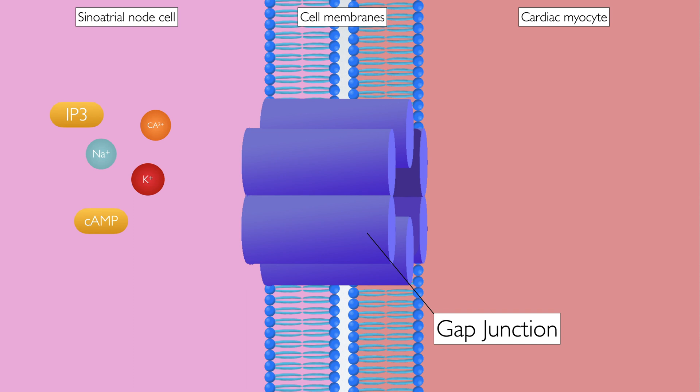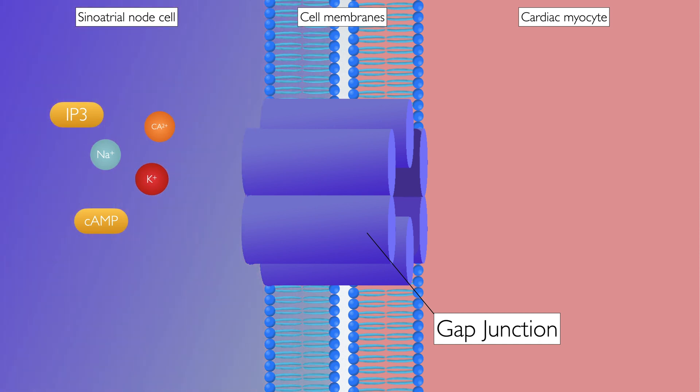Gap junctions, as their name suggests, sit at the junction between two cell membranes and allow a passage from one cell to another. In this image, you can see the sinoatrial node cell on the left, and as it depolarises, it allows positively charged ions to move into the cardiac myocyte on the right, as well as chemical messengers such as IP3 and cyclic AMP. The net movement of these positively charged ions and molecules generates an internal cascade of events which leads to an action potential and depolarisation of the myocyte.